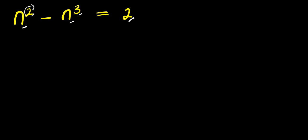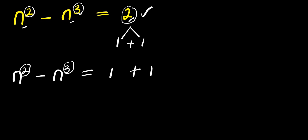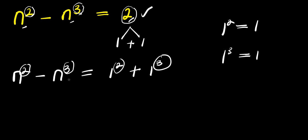There is power 2 here and power 3 here. So you can express the 2 on the right-hand side as a summation of 1 and 1. Then you have n power 2 minus n power 3 equals 1 plus 1, which is the same thing as 2. Since we have power 2 and power 3, we can raise each 1 to those respective powers — 1 power 2 is still 1, and 1 power 3 is still 1 — so the exponents correspond on both sides.